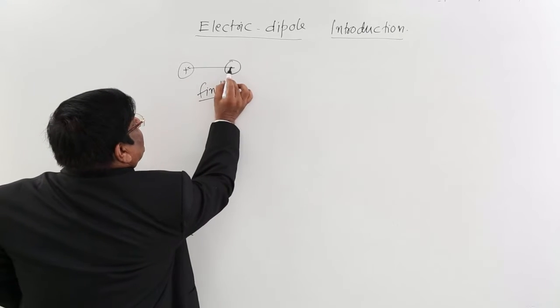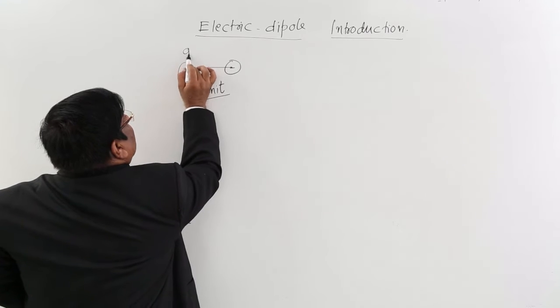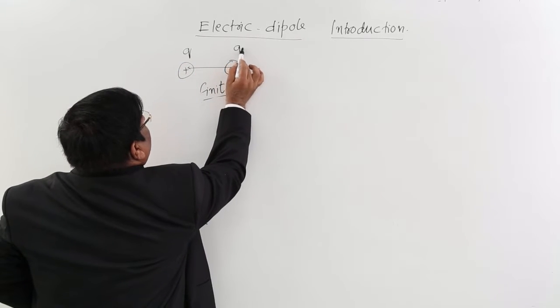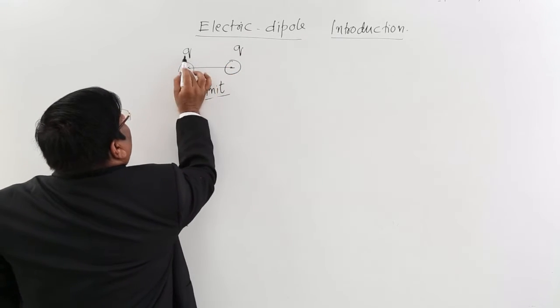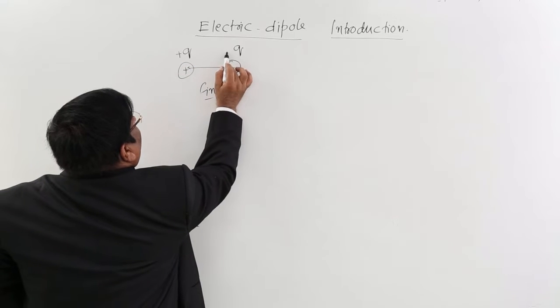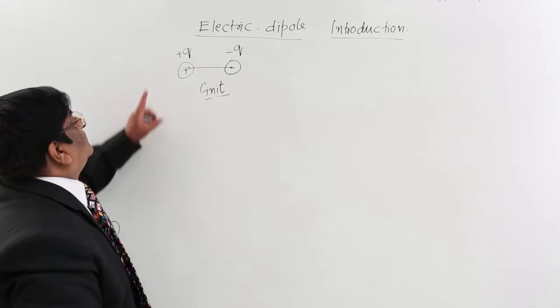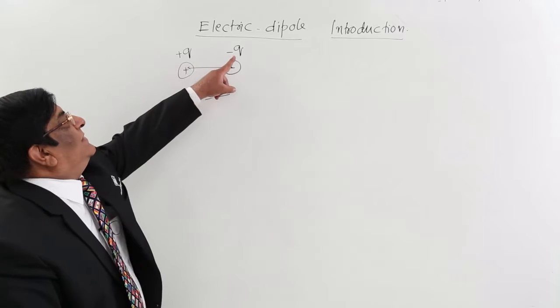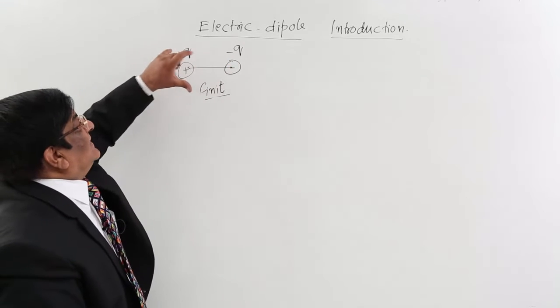The quantity of this positive and negative charge—the condition is these two have the same magnitude. One should be positive and one should be negative, but magnitude should be the same. If this is the condition,